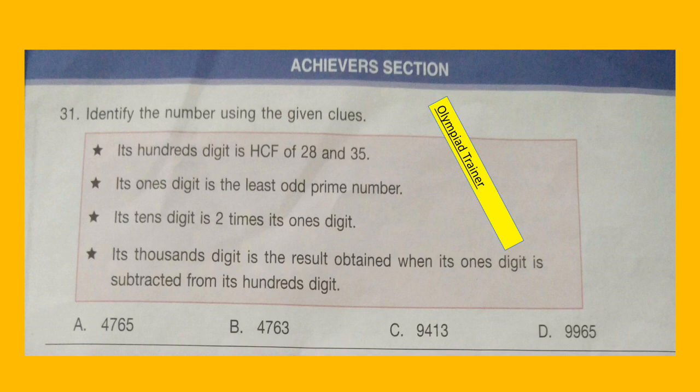Here comes the Achievers section. Question 31: Identify the number using the given clues. Its hundreds digit is the HCF of 28 and 35. Its ones digit is the least odd prime number. Its tens digit is 2 times its ones digit. Its thousands digit is the result obtained when its ones digit is subtracted from its hundreds digit.